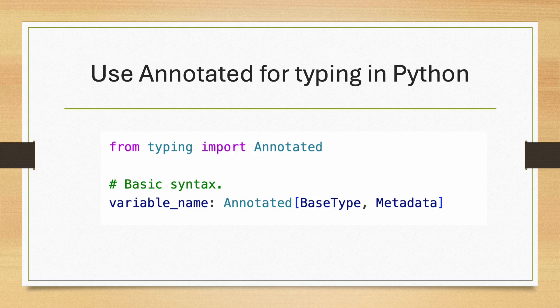In Python, Annotated is used in combination with type hints to add metadata to your type annotations. It is useful when you want to provide additional information about a variable's type without affecting its core type.